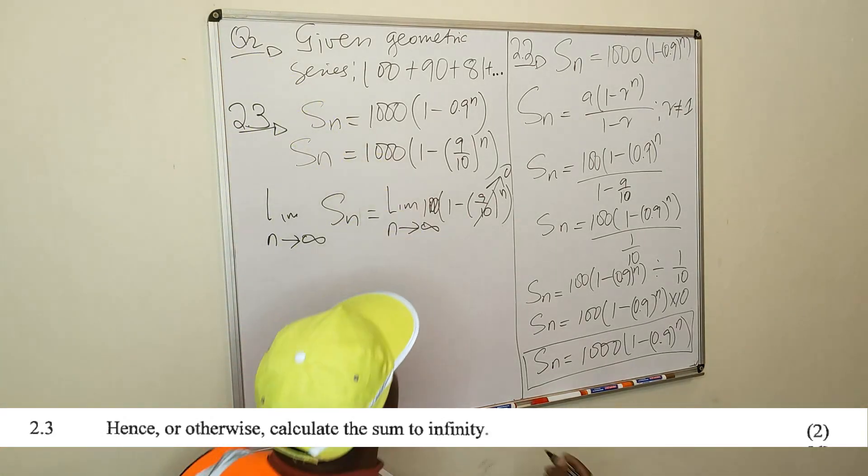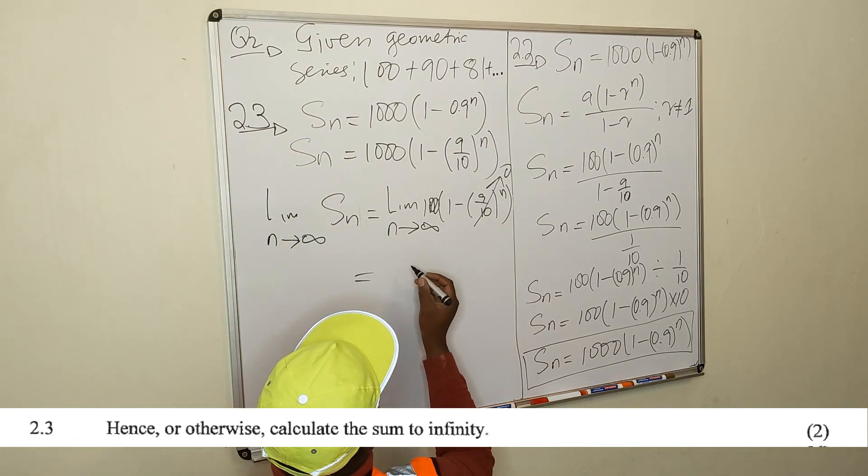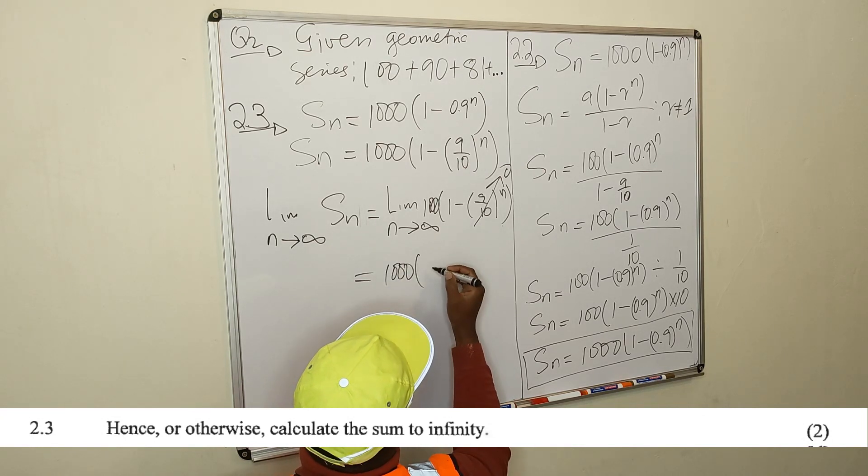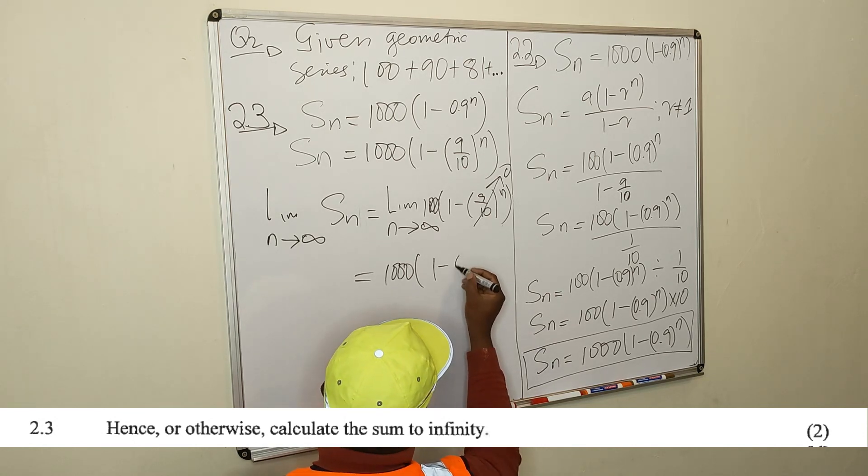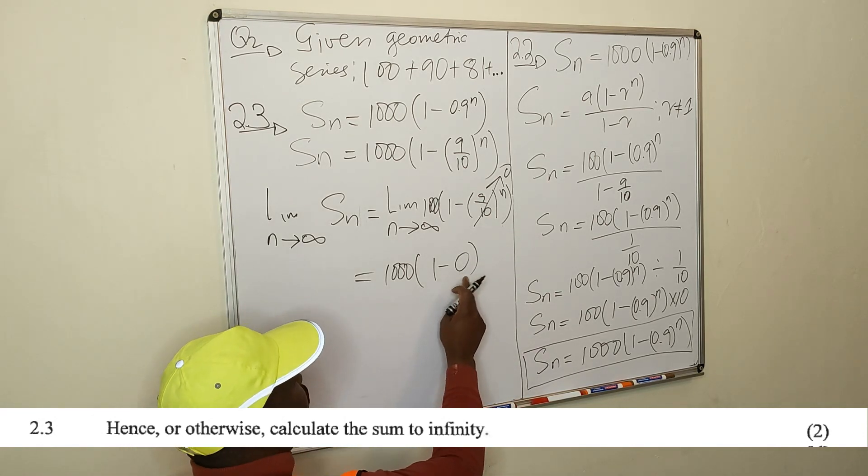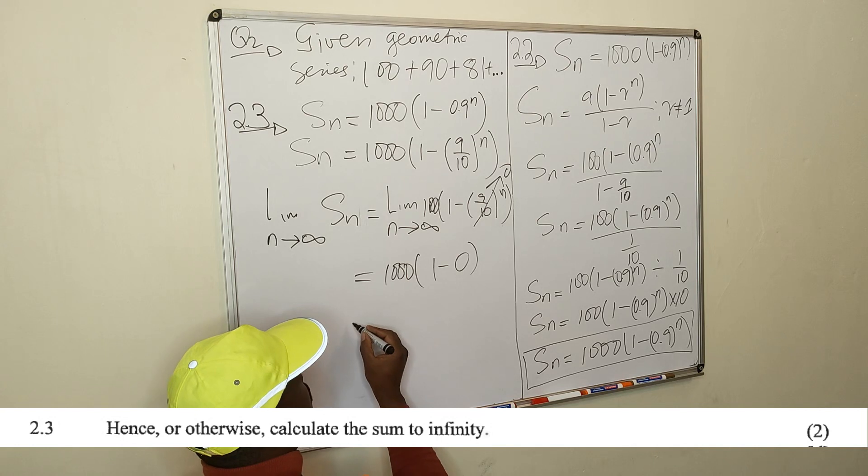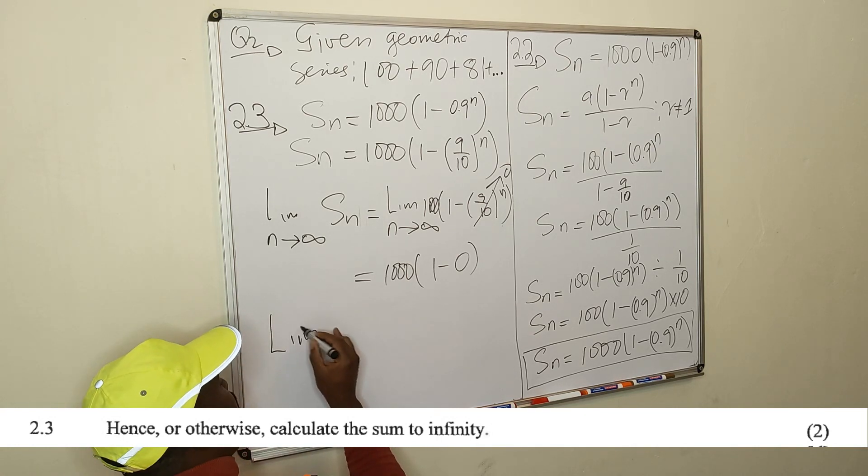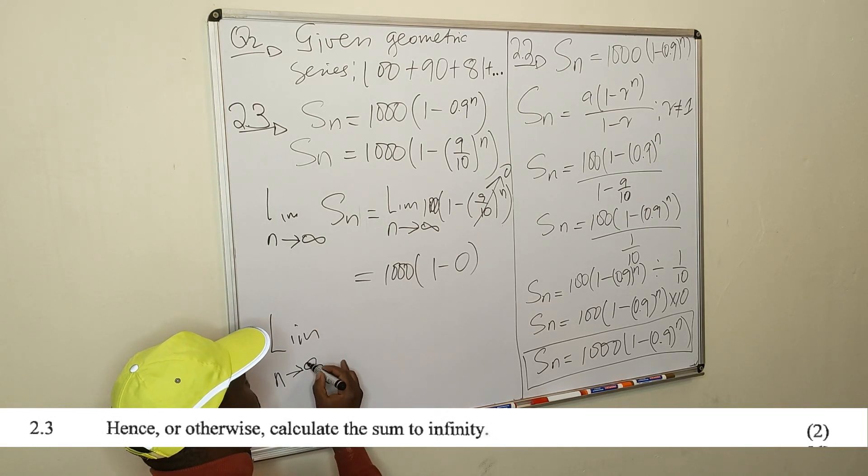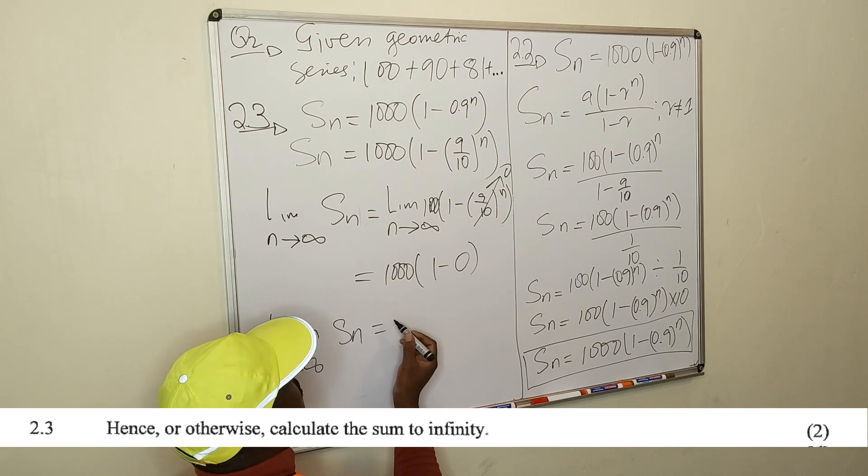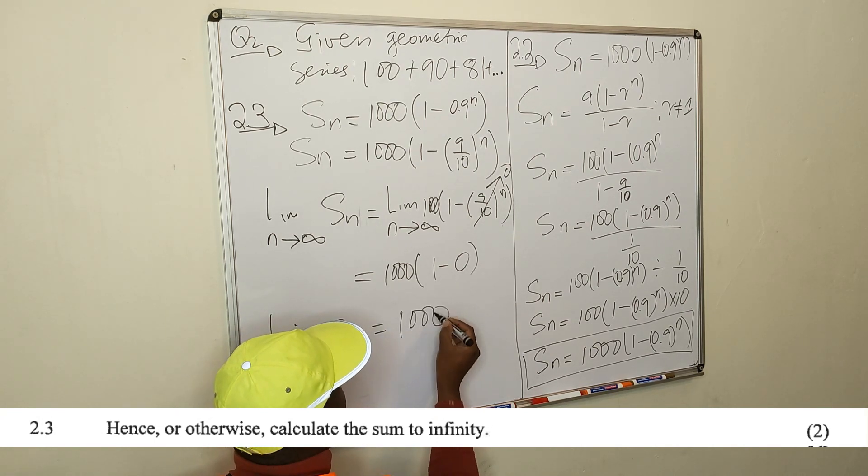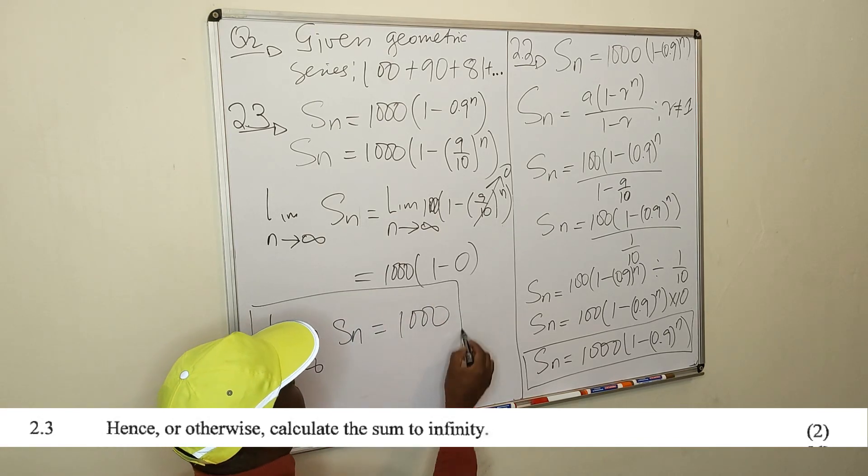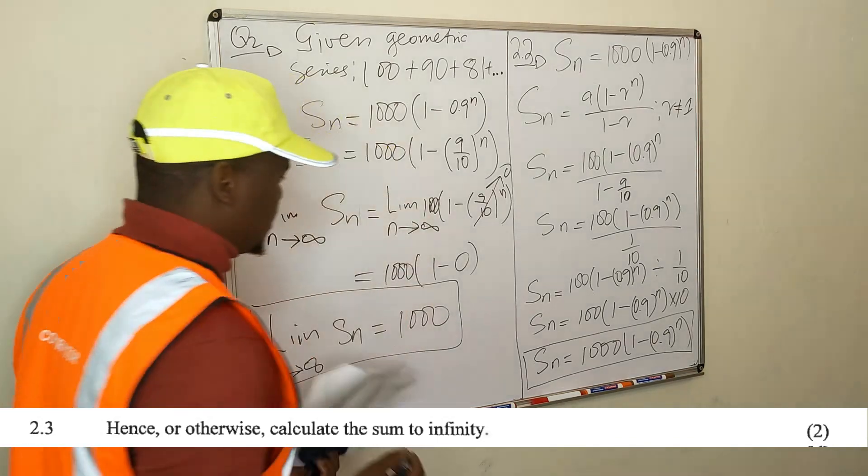If you allow n to go to become very big, approach infinity, then your term will approach 0, will become very close to 0. So now what we are left with, we will be left with 1000 times 1 minus, minus 0, because this will get very close to 0. It will approach 0, minus 0. Therefore the limit as n goes to infinity of the sum of this geometric series would be 1000. So the limit, the sum to infinity is 1000 of this thing.